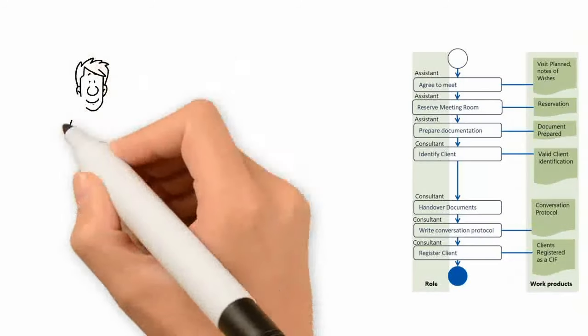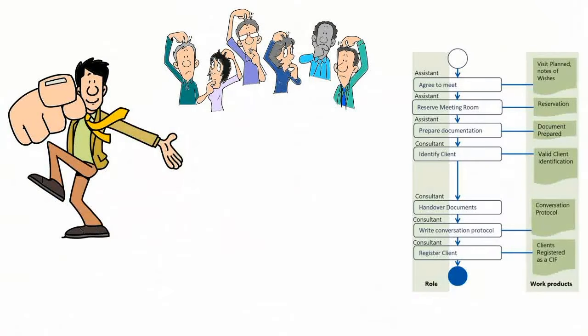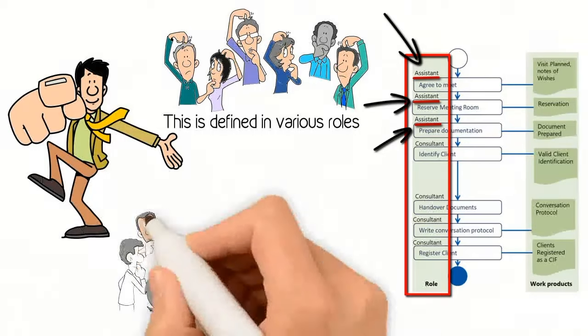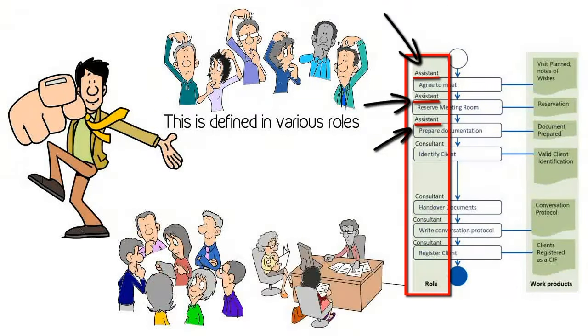Now you know what is the expected outcome of the process, but it's not clear who's going to do that. This is defined in various roles. The first three items are probably done by an assistant, and to make it simple, the rest is done by a consultant.